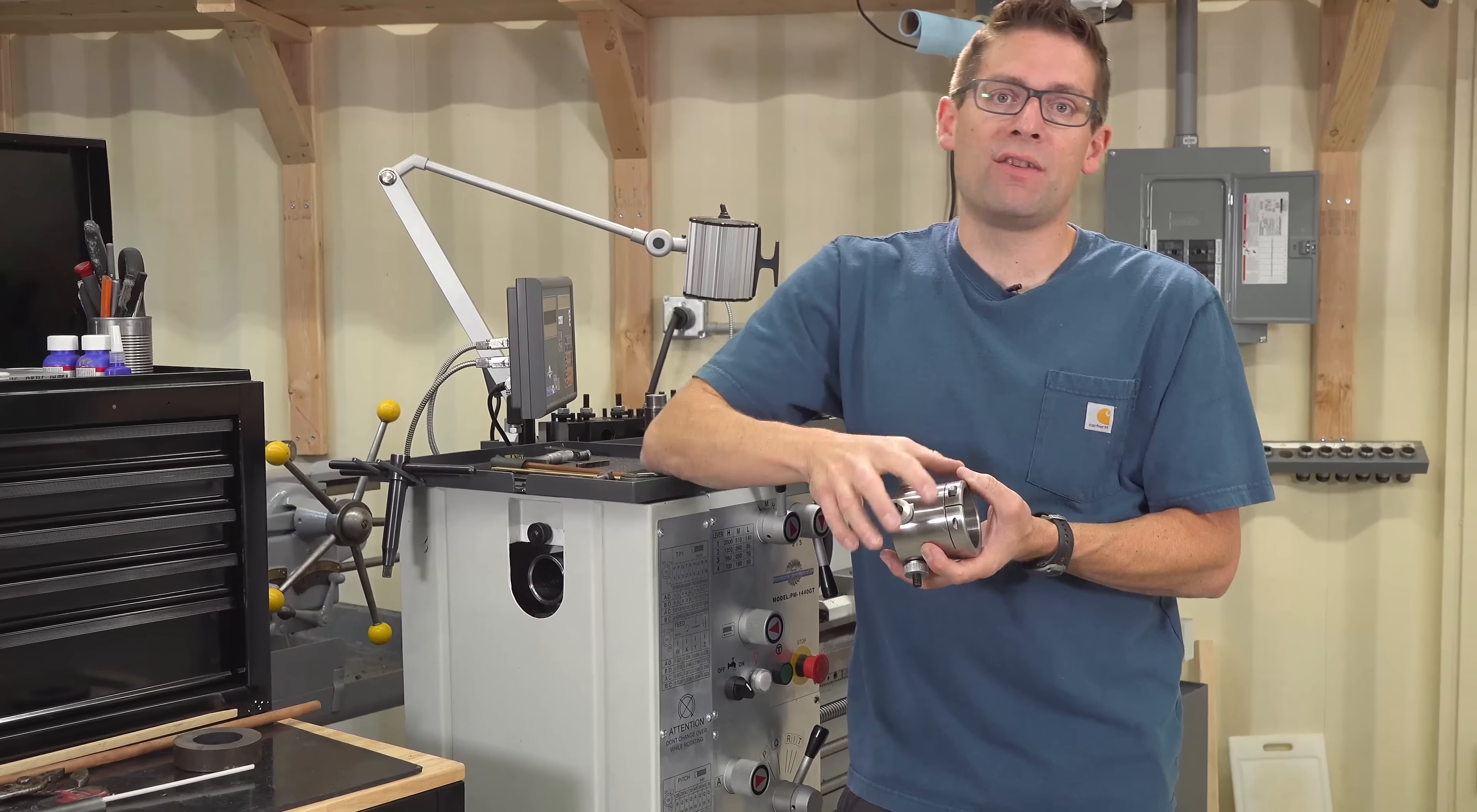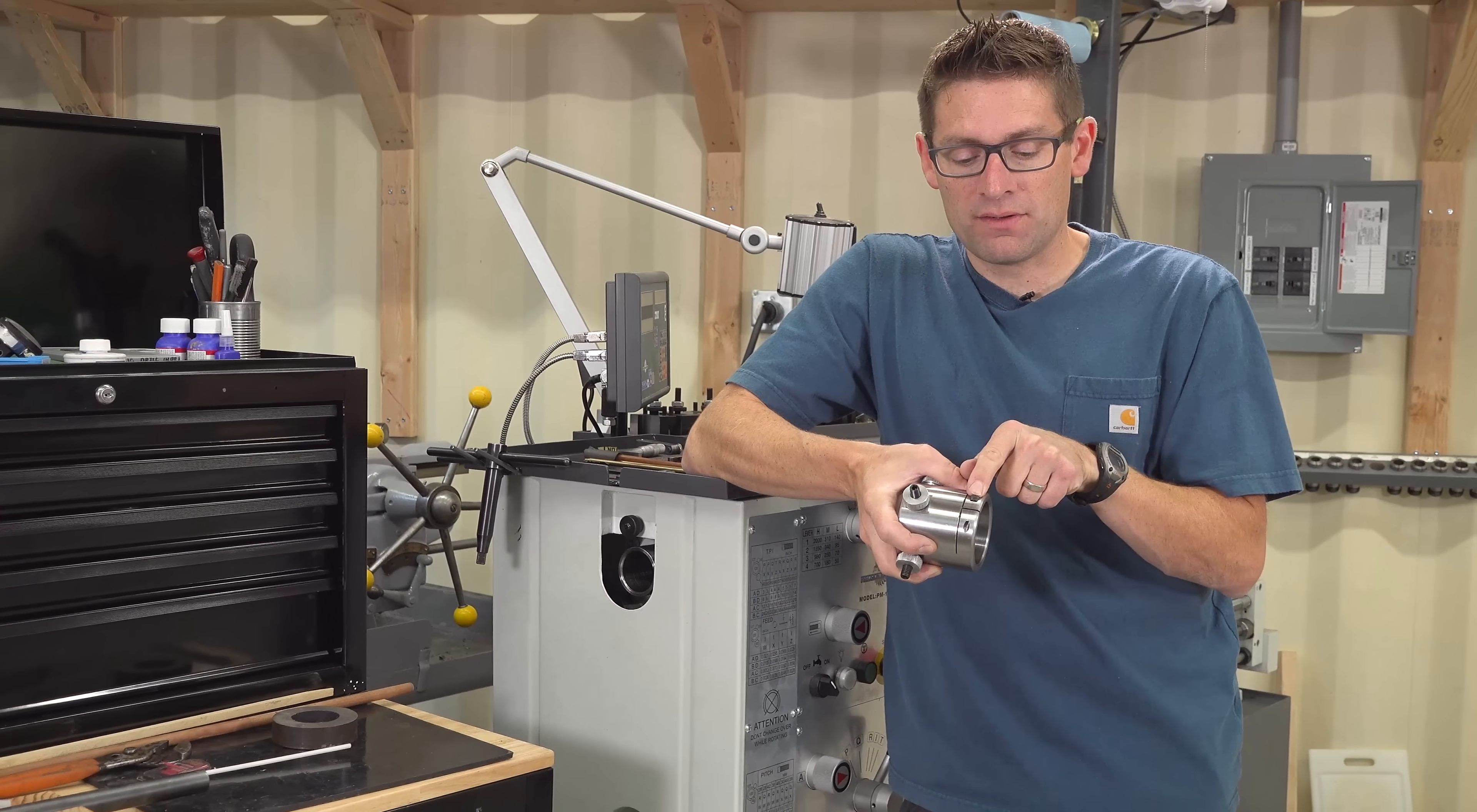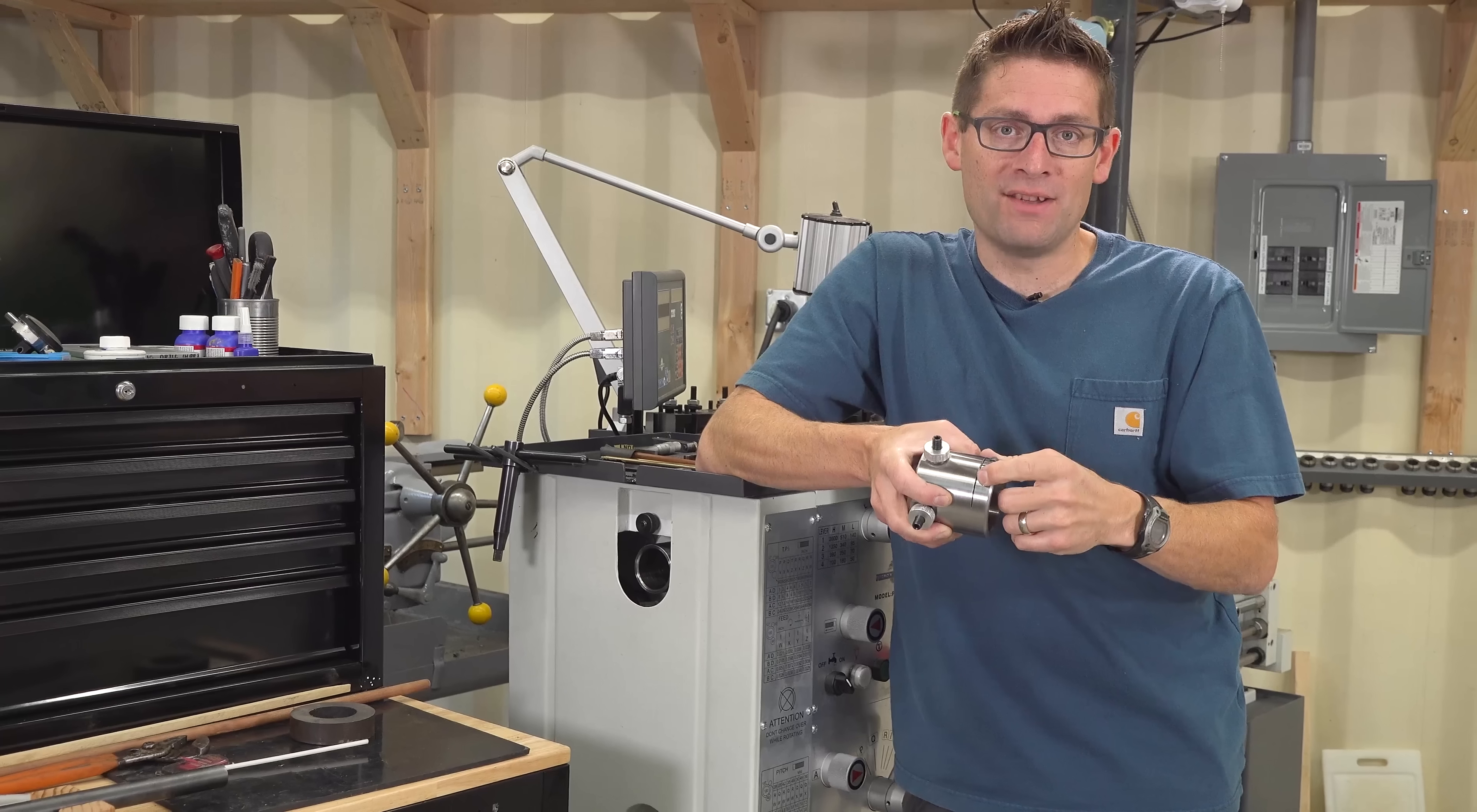So I started by drilling all the way through with essentially the tapping diameter for the hole and then drilled out the major diameter for the bolt and then ran a tap all the way through which basically was just running right through the first hole without touching it essentially and then tapping the threads on the other side.